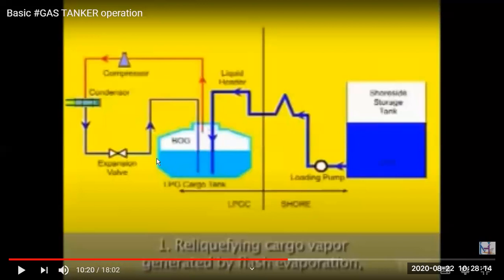So when the liquid cargo enters the tank, if the tank is at a slightly higher temperature — due to vibration, heat exchange from outside, or any other reason — whenever the liquid reaches a temperature above minus 42°C, that is its boiling point, it will start becoming vapor. That is called boil-off gas. There will be a lot of boil-off at the surface, and it keeps continuing. If we don't reliquefy this gas, there will be a lot of cargo loss.